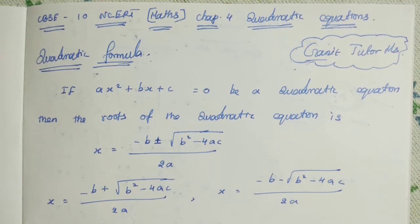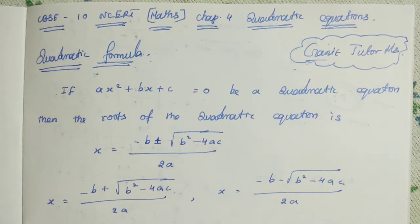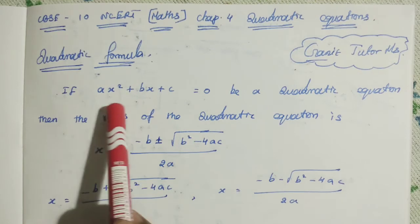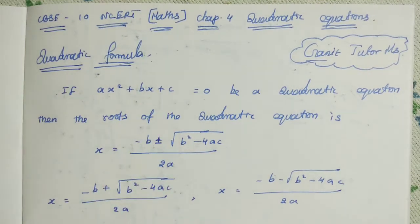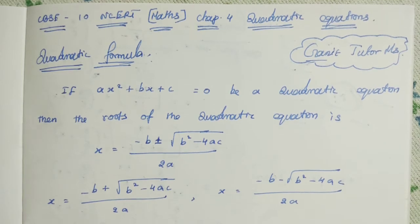We can use this quadratic formula to find the roots of a given quadratic equation. We all know that the quadratic equation AX squared plus BX plus C — we know that it is a general form of quadratic equation AX squared plus BX plus C is equal to zero.